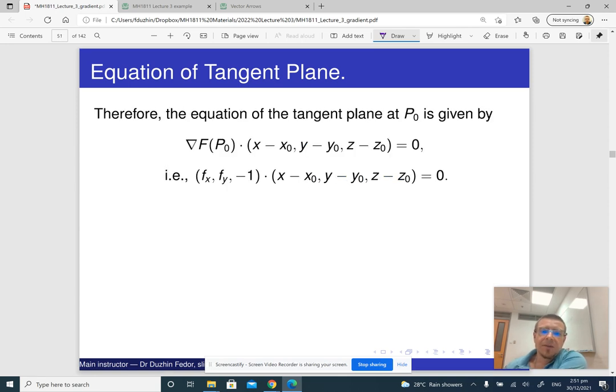So this is the normal vector to the tangent plane to the level surface. And here is what we do applying our machinery from the previous part. So this is our technique. This is ∇f, and this is x minus x_0, y minus y_0, z minus z_0.